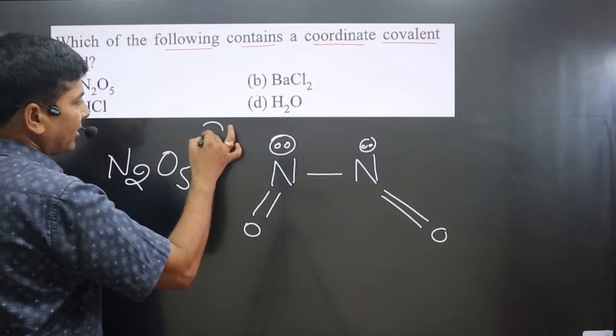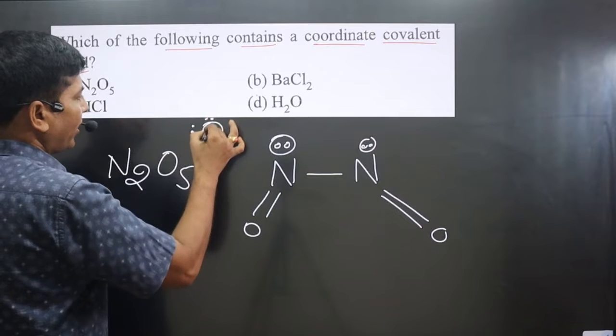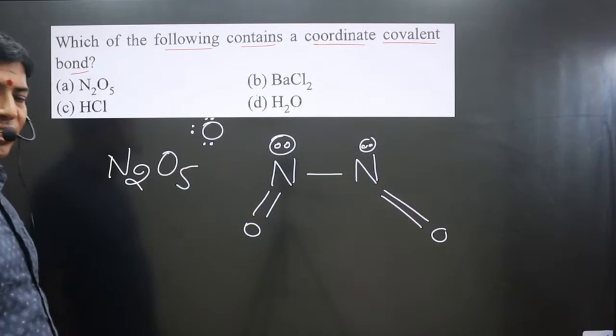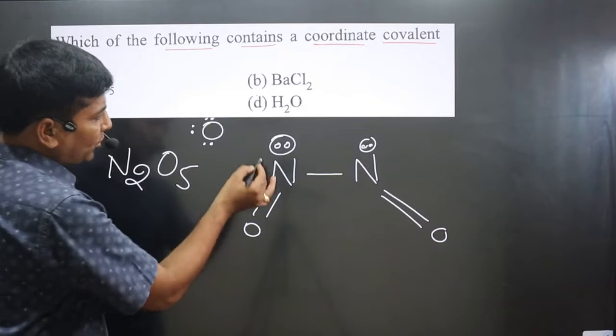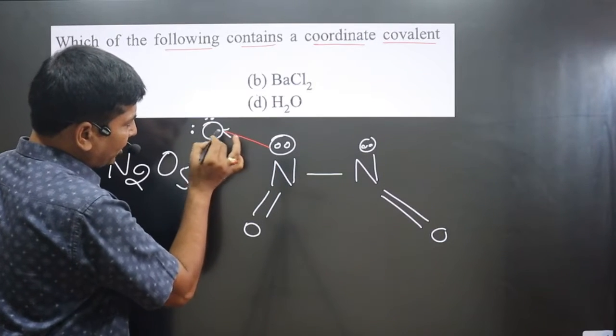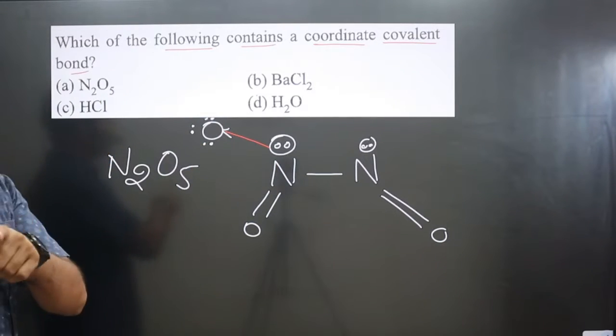I take one oxygen. Oxygen has six valence electrons. If it gains two electrons, its octet will be complete. So this nitrogen will donate electron density forming a coordinate bond. Here we got the coordinate bond.